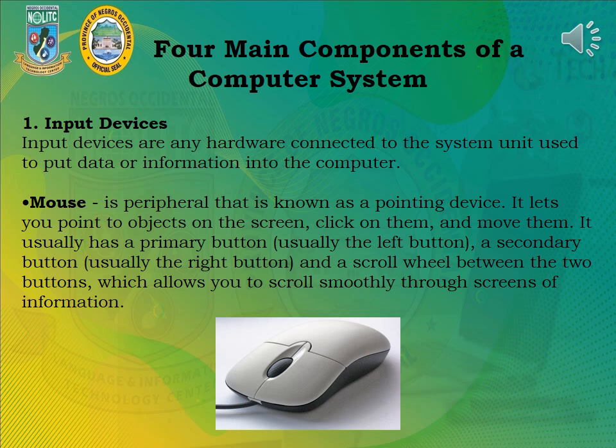The first of the 4 main components of a computer system is Input Devices. Input devices are any hardware connected to the system unit used to put data or information into the computer. The mouse is a peripheral that is known as a pointing device. It lets you point to objects on the screen, click on them, and move them.